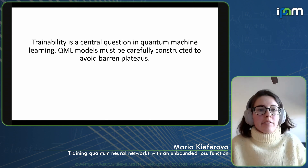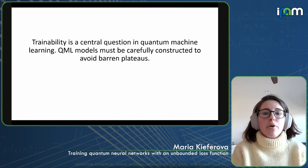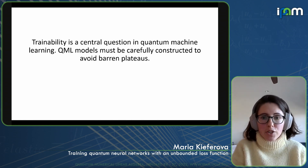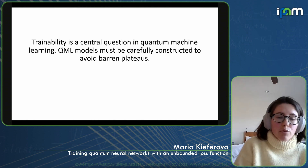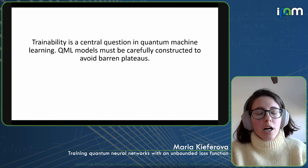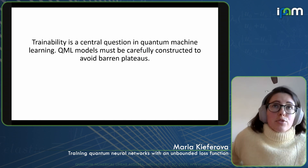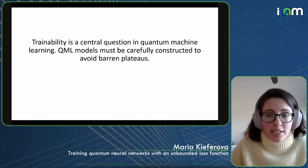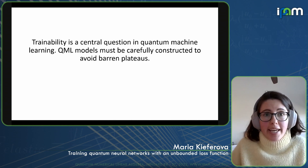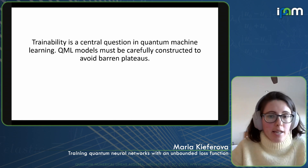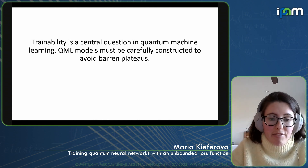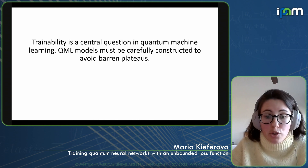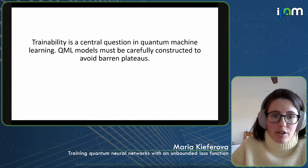To summarize: trainability is a very important, central question in quantum machine learning, and if we are not constructing our models carefully, one would almost certainly run into a barren plateau. Creating objective functions different from simply measuring some Hermitian operator can at least formally break one of the assumptions underlying barren plateau results. But even after our work, we still don't have any rigorous guarantees that this technique would work. I think there is reason to be optimistic about the prospects of quantum machine learning.